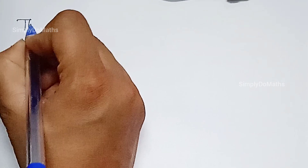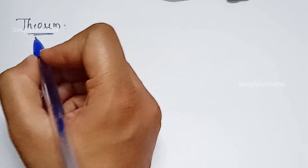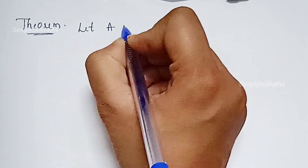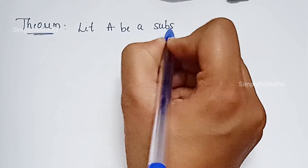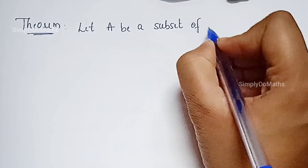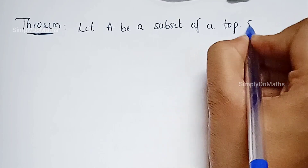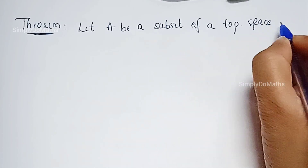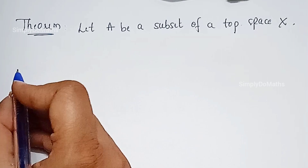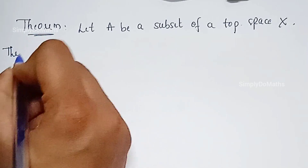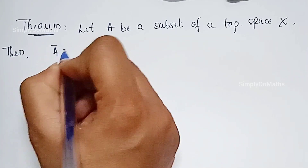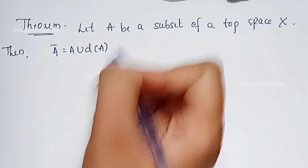Hello everyone. Today let's see one important property of derived set. Let's go with the statement of the theorem. Let capital A be a subset of a topological space X. Then A bar is nothing but A union the derived set of A.